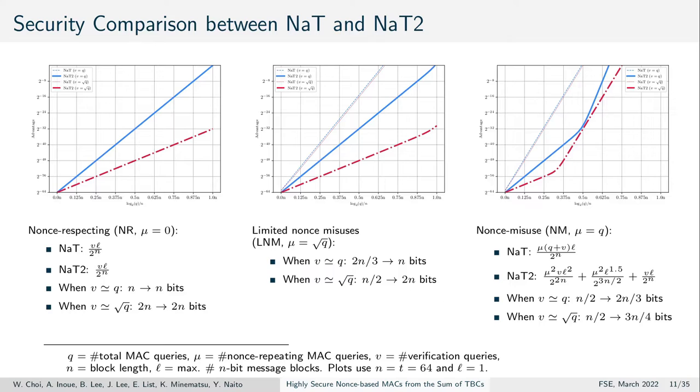We can illustrate this as follows. Here, the light graphs represent the security of NAT and the bold graphs that of our construction. For simplicity, we assume ideal primitives here and that the tweak size is equal to the block size and n is 64, just for an example.